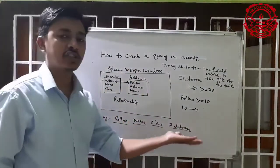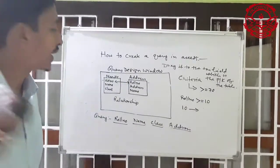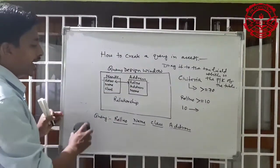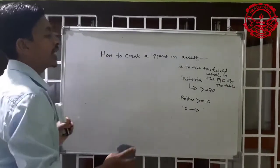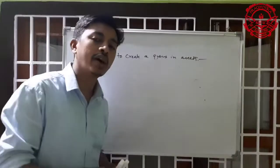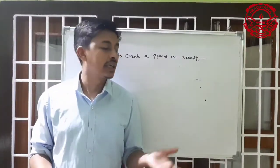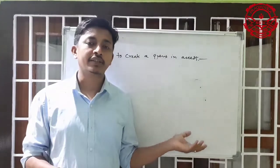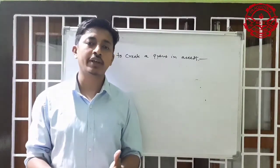After setting the conditions, you can run the query. After successful design of the query, you have to run the query. When you run the query, if you have any error in the query design or query grid, it will show. To run a query, click Run in the design tab — there is a run option in the result group of the design tab.